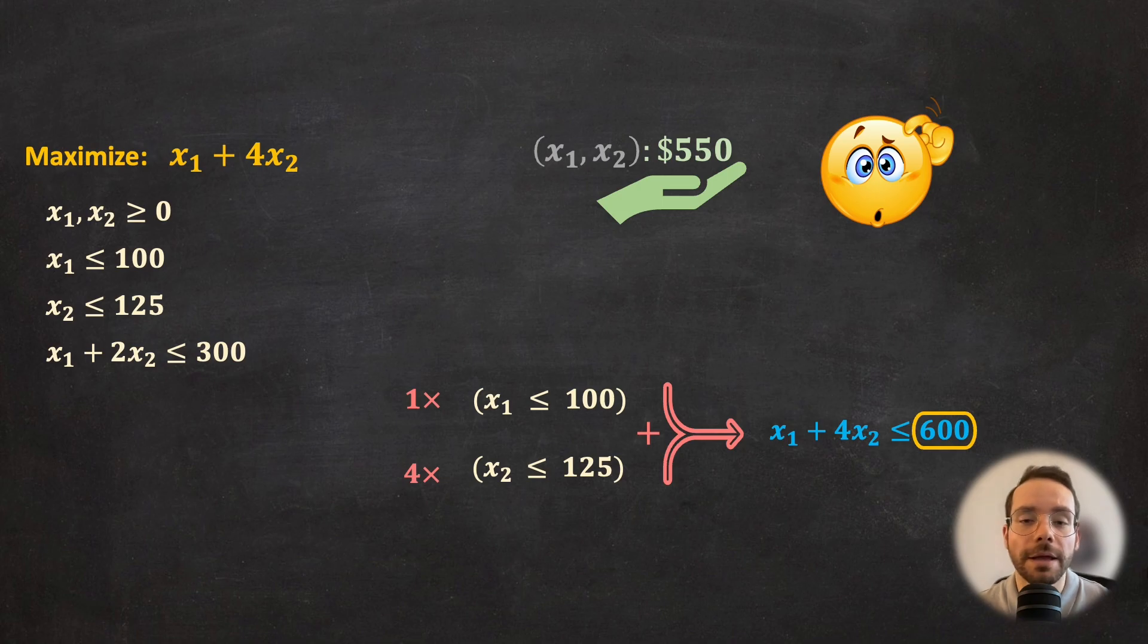This is great, but it doesn't exactly tell us how optimal 550 is. Can we bring this down even further? Can we find a tighter upper bound for the objective function?